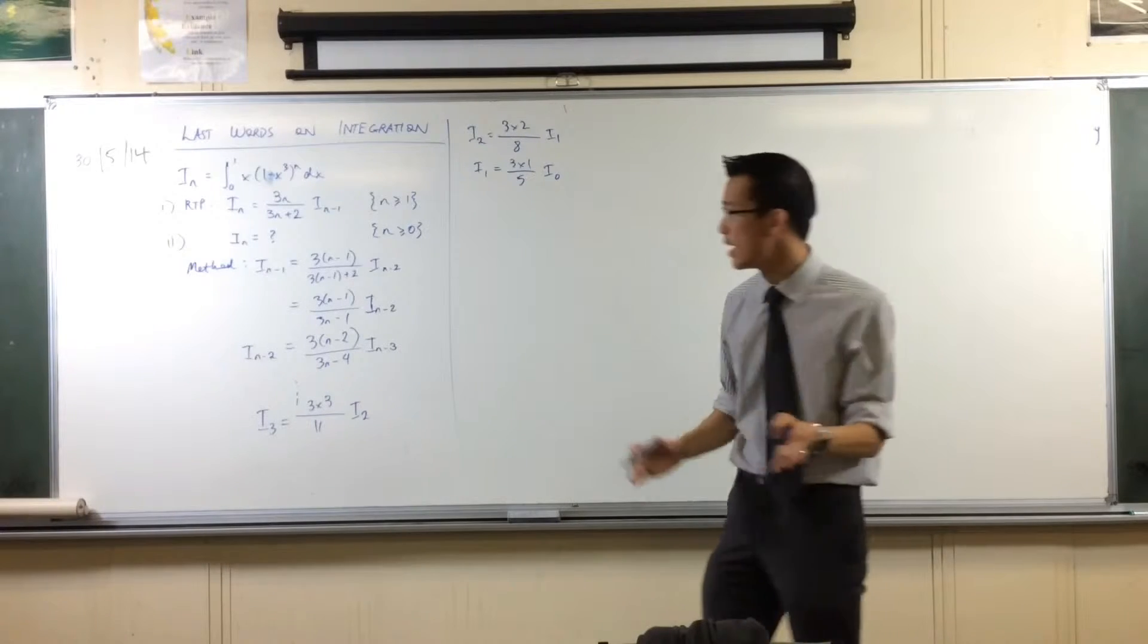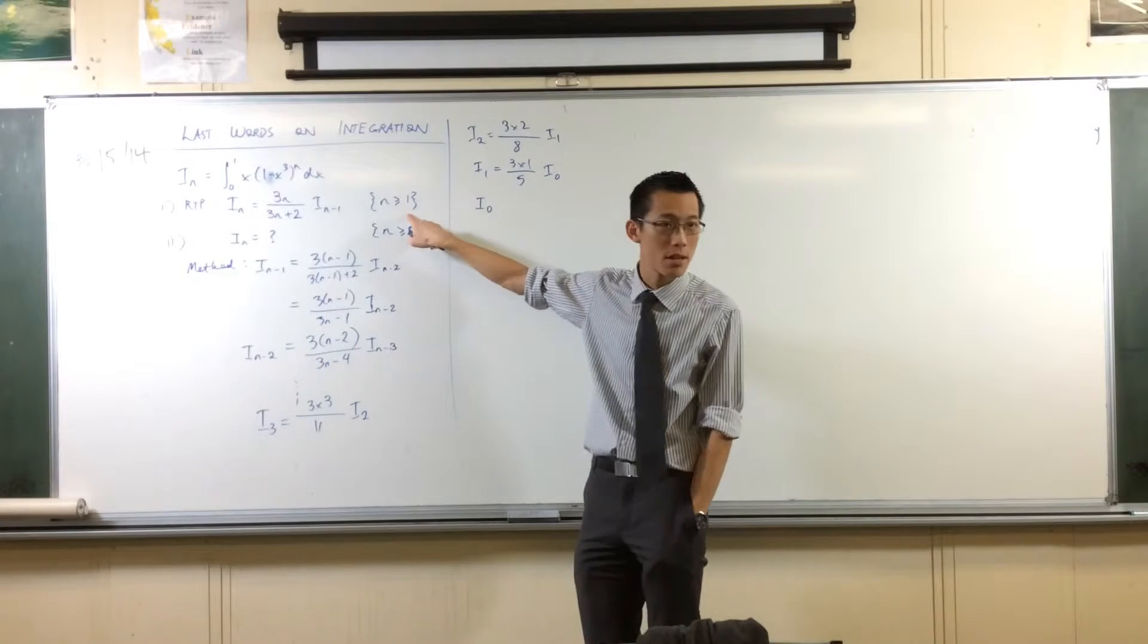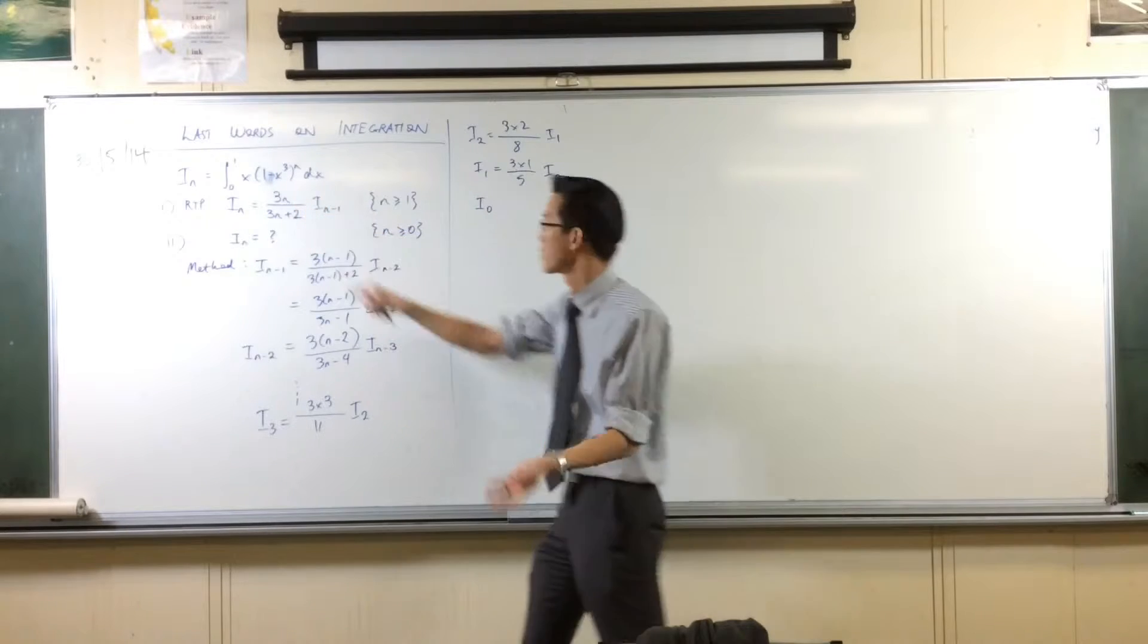I_1. Now, at this point, I could evaluate this, couldn't I? I_1. Think about what I_1 looks like. You can evaluate. That's just a polynomial, isn't it? It's a simple one, too. But, we want this to include I_0. So I'm going to keep going.